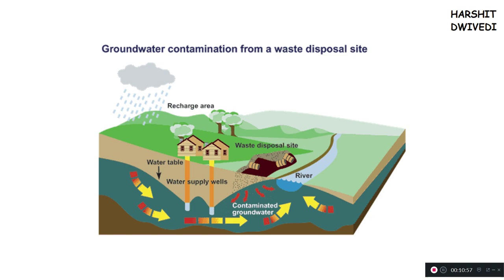The next type is groundwater pollution. We produce a whole lot of waste today, which is disposed to waste disposal sites. This waste slowly makes its way through the soil to the groundwater, contaminating it. Since groundwater continuously circulates, it will go into rivers and other places, so this contaminated groundwater pollutes rivers and other groundwater aquifers. We think we have disposed of that waste, but it is actually polluting the groundwater through leaching and other processes, which I will discuss in a separate dedicated video.